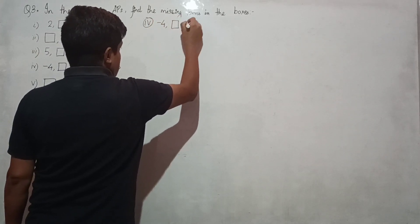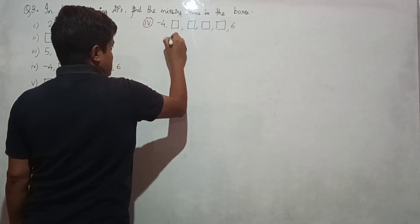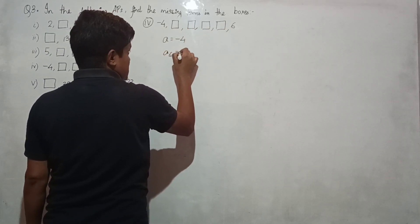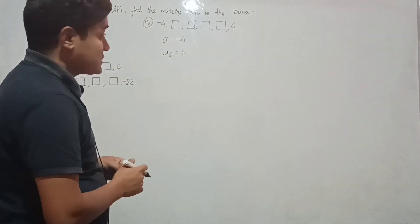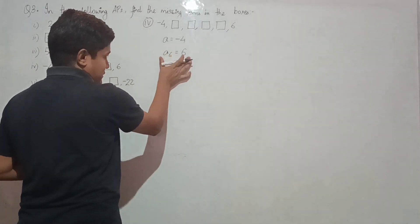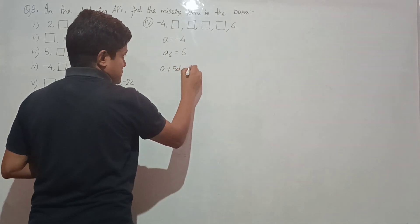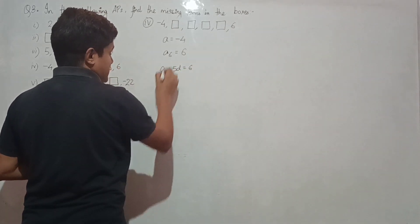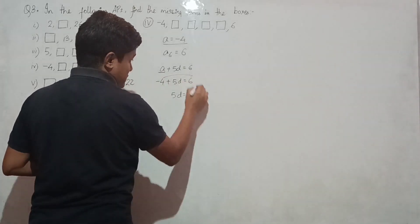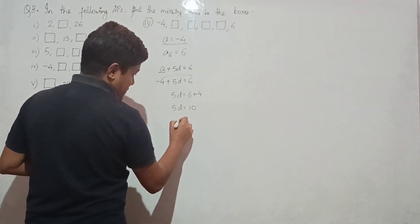Question number 4: minus 4, box, box, box, box, 6. There are four boxes. First term is minus 4 and the sixth term is 6. Using the formula: a plus 5d equals 6, so minus 4 plus 5d equals 6, giving 5d equals 10, and d equals 2.